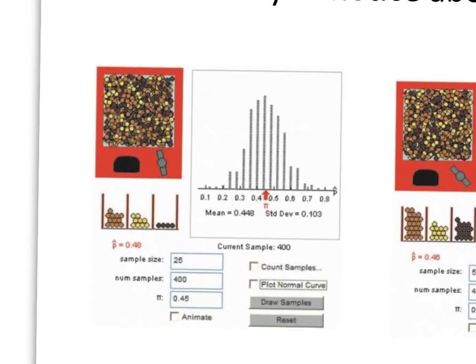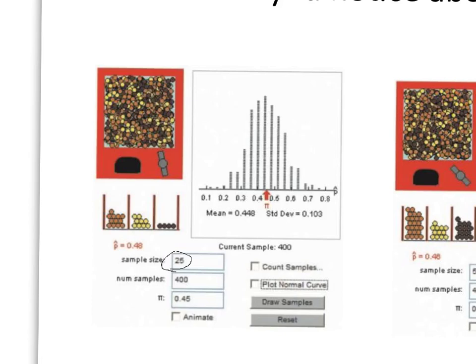This first picture represents a sample size of 25 with 400 samples — this is the distribution of all of our samples, not every possible sample, so it's not a full sampling distribution. It uses pi, but that's the same as P. With P equal to 0.45, the center of our samples is very close to 0.45, but there's variability — some values as high as 0.75 and as low as 0.1. So the variability here is relatively high; we get some answers far away from what we'd expect.